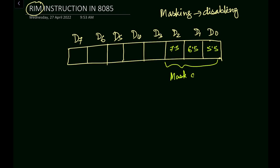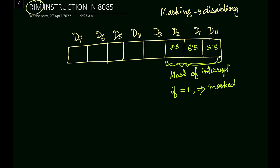This is the mask of interrupts. When an interrupt is masked, that will be dependent on these bits. If the value is 1, that means the interrupt is masked — meaning it is disabled. For example, if we have 1, 0, 0, that means RST 7.5 is disabled and the others are enabled. Whenever a bit here is 1, that interrupt is masked, meaning it is disabled.